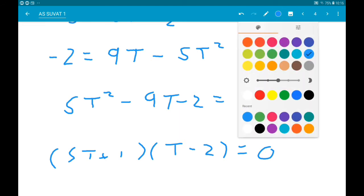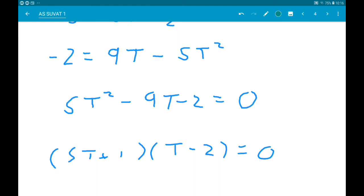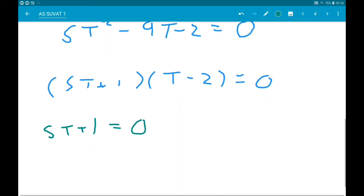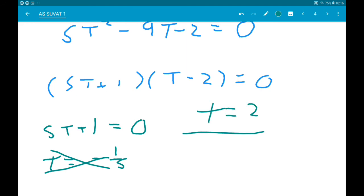Now this gives us 2 possible solutions. First bracket tells us 5T add 1 equals 0. Now that would tell us T is minus one-fifth. But T is time. Time cannot be negative, so that is invalid. Now the other one tells us T equals 2. And that's it. Boom.